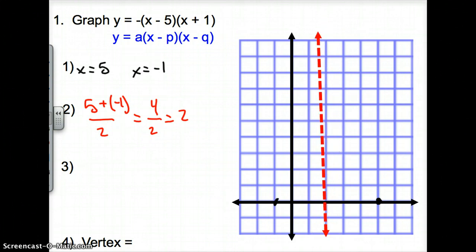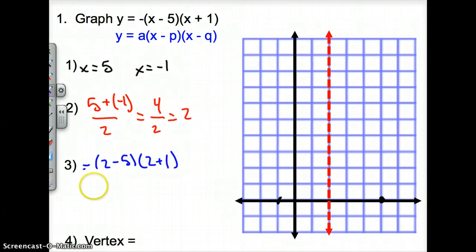So now we can draw our axis of symmetry at 2. So I'm going to put my axis of symmetry right there at 2. Now we can find our vertex by plugging this 2 in for my x values for my equation. So I have a negative 2 minus 5 times 2 plus 1. We simplify this to be a negative times a negative 3 times 3. So now 2 negatives make a positive 3 times 3, which is 9. So now our vertex is 2, 9.